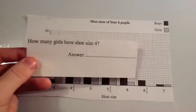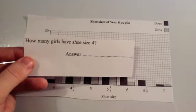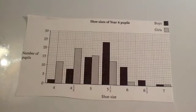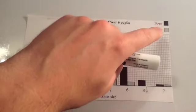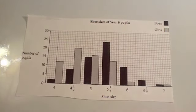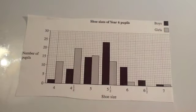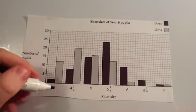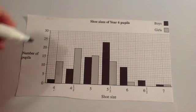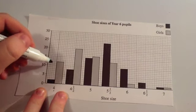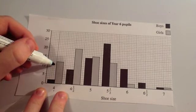The first question says: how many girls have shoe size 4? So the first thing to consider is girls are the grey bar and it says shoe size 4 — that's this bar here. The grey bar with shoe size 4 goes up to 10.